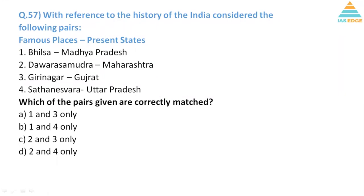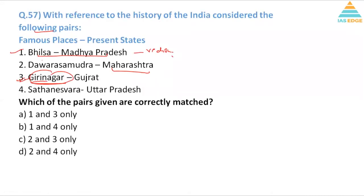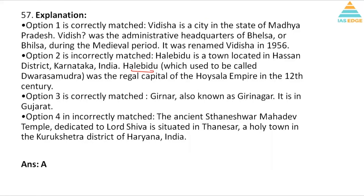With reference to the history of India, consider the following pairs: famous places and present states. Besnagar - Madhya Pradesh. Besnagar was later named as Vidisha, so this is right. Giri Nagar, Girnar, Gujarat is also correct. Dwarasamudra - Maharashtra. Dwarasamudra is not in Maharashtra, rather it is the old name of Halebidu in Karnataka, so 2 is incorrect. Sataneshwara, Haryana - so one and three are correct, so A is the right answer.